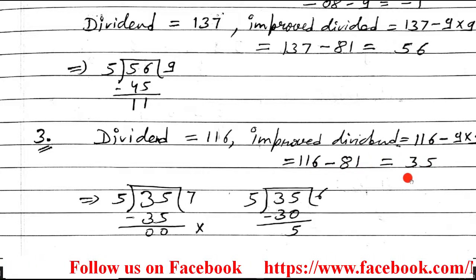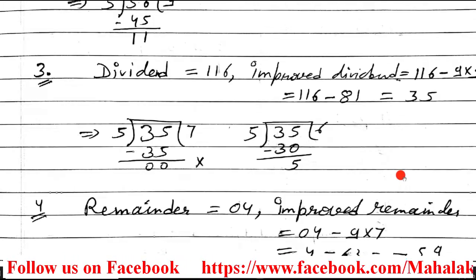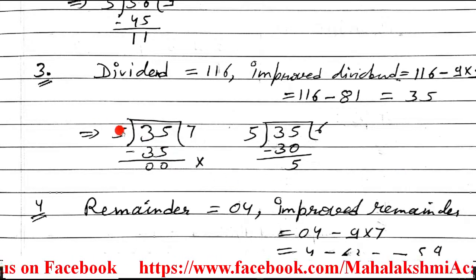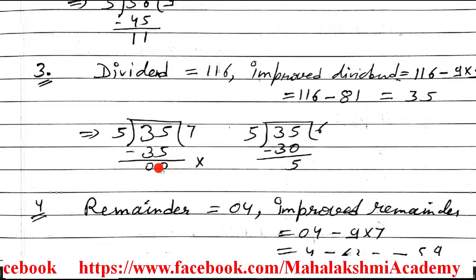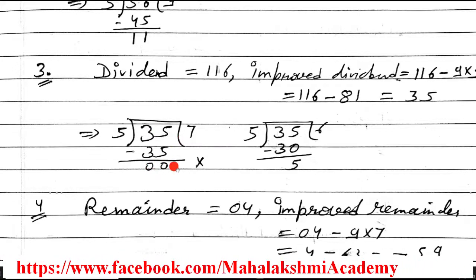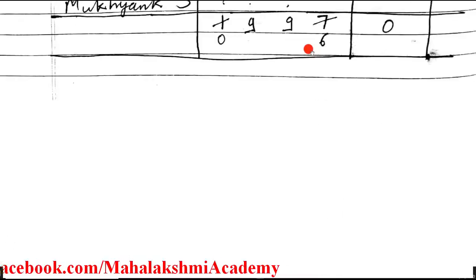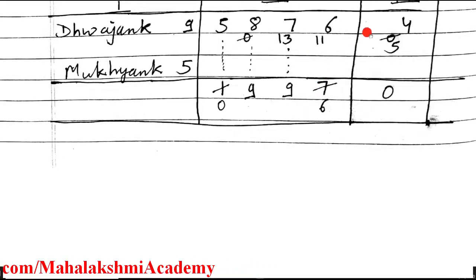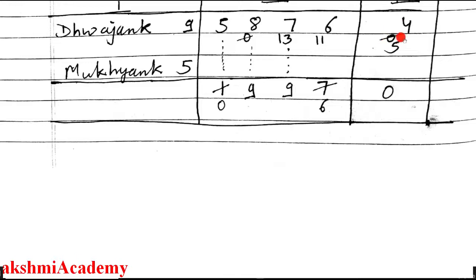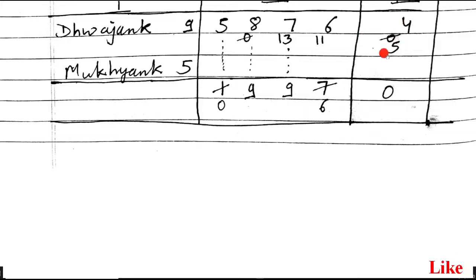Divide 35 by 5: 5×7=35, remainder 0. Enter quotient 7 and remainder 0 in the table. For the remainder section: improved remainder is 04 minus 9×7 = 04 minus 63 — we are getting a negative answer, so we cannot take 7 here. Reduce it: one less than 7 is 6.